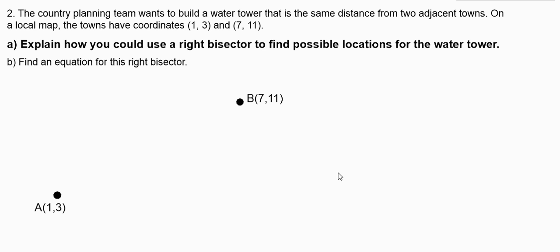So here's what we have. We have two towns which I'm labeling A and B. And we want to build a third thing on this map, a third dot, which is a water tower. And what we want is that water tower to be exactly the same distance away from B as it is from A. Now clearly that water tower is not in a good location.